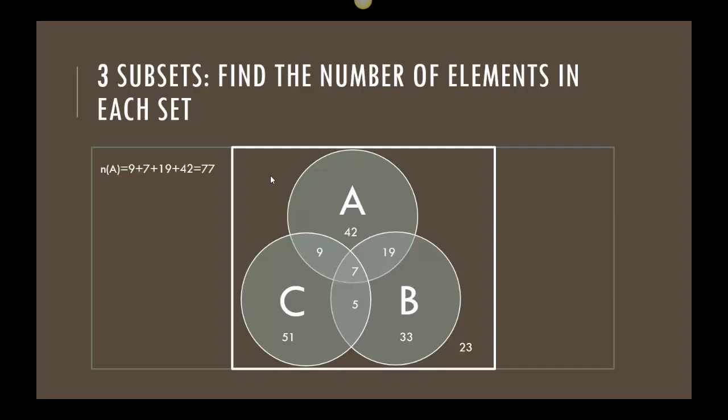In this first one, I just want to look at individually A, B, and C, and figure out how many number of elements are in each set. What I want you always thinking is it's a circle. When I say A, it's a circle. In that circle, I can say I have 9, 7, 19, and 42. To get the number of elements in A, to find the cardinality, I want to add those numbers up. Definitely be using your calculators. I got a total of 77 elements in A.